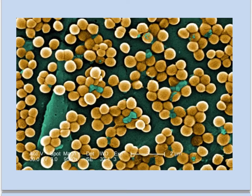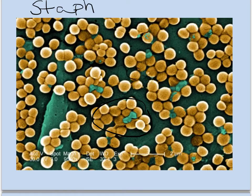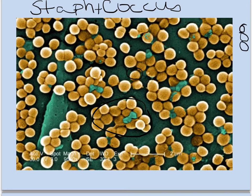Here is this bacteria — you can see it's in clumps, so we call it staph. The bacteria are spherical, so this is coccus. If it were in a chain, it would be strepto, or strep.